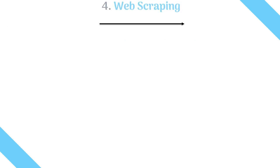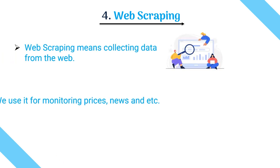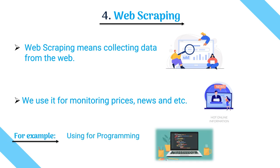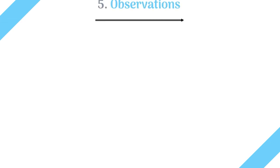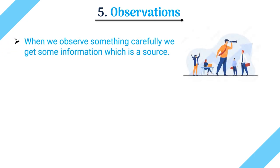The fourth source is web scraping. Web scraping means collecting data from the web using certain technologies. We use it for monitoring prices, devices, news, and more. For example, using programming we can do web scraping using Beautiful Soup in Python — Beautiful Soup is a package in Python.